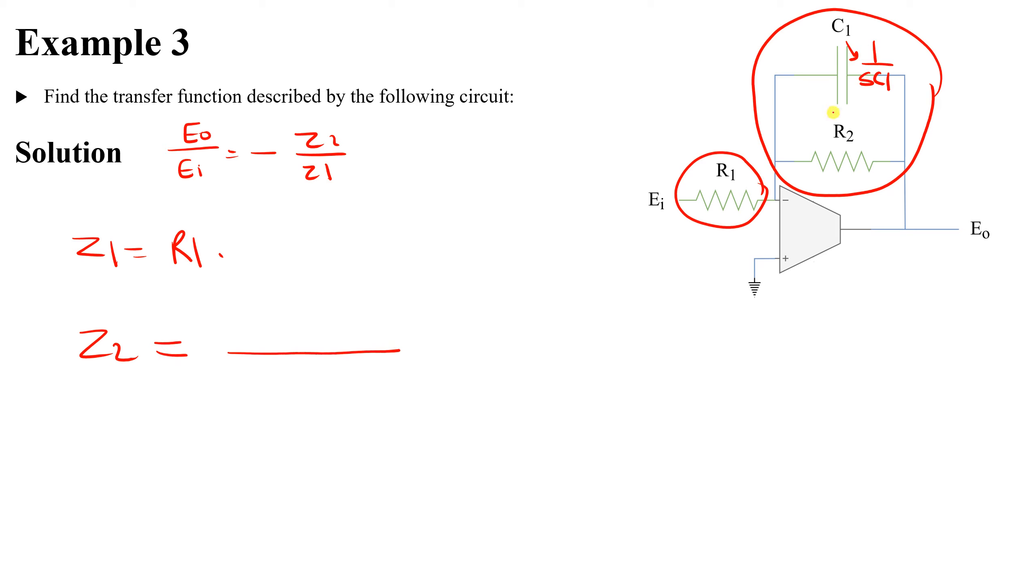Their product divided by their sum. So it will be R2 multiplied by 1 over sC1, divided by their sum. Now take this element down here, one of our denominator component, take it down. So sC1 multiplied by all of this, so R2, so it will be sR2C1, plus one.